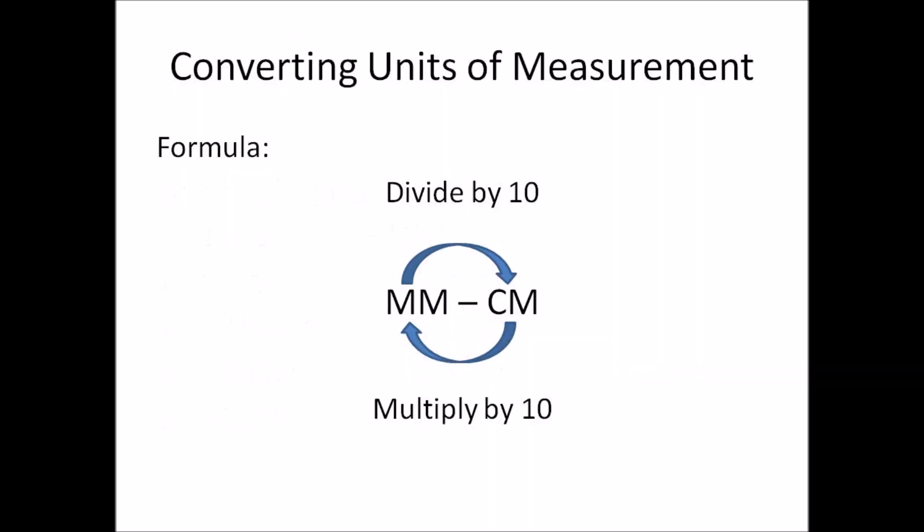In conclusion, this is what we have learned today: converting millimeters to centimeters and converting centimeters back to millimeters. To convert millimeters to centimeters, you divide by 10. To convert centimeters back to millimeters, you multiply by 10. This is the formula you need to remember whenever you convert between millimeters and centimeters.